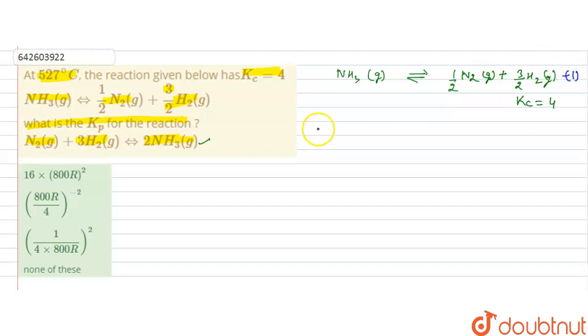Reversing the reaction 1 will give us half N2 gaseous plus 3 by 2 H2 gaseous is NH3 gaseous.